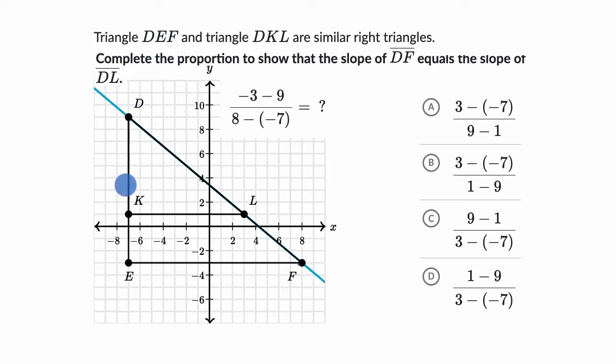We're told that triangle DEF and triangle DKL are similar right triangles. Complete the proportion to show that the slope of DF, so that's this segment right over here, DF, equals the slope of DL.